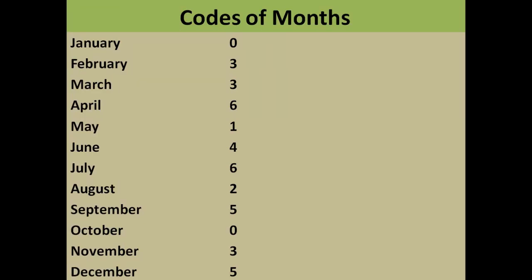The first thing you need to remember is the codes of the months. Here are the 12 codes for the corresponding 12 months: January = 0, February = 3, March = 3, April = 6, May = 1, June = 4, July = 6, August = 2, September = 5, October = 0, November = 3, December = 5. The sequence is 0, 3, 3, 6, 1, 4, 6, 2, 5, 0, 3, 5. You have to learn these codes.